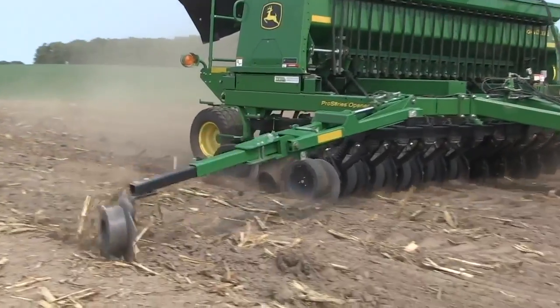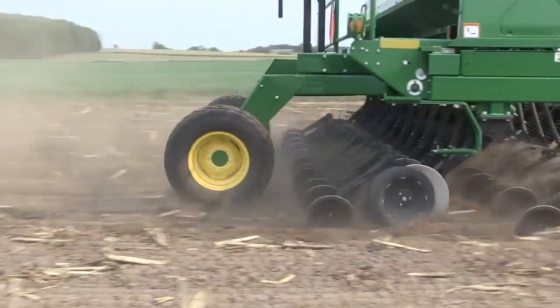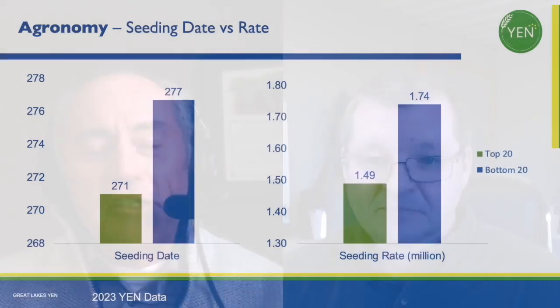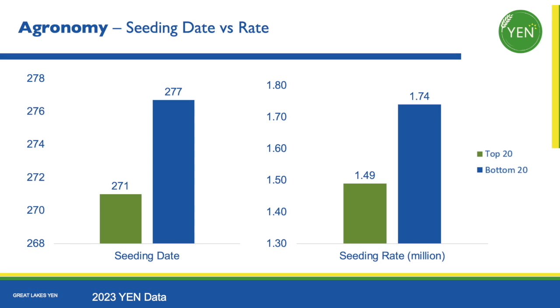I think probably the most important thing high-yield growers are doing is planting — I used to say planting early, but I would say planting on time — because the only way to get those high head numbers is to get planted in the fall early enough to allow fall tillering to occur. Planting date is probably the very most important thing you can do to drive higher yield potential. We see it in our research trials, we're seeing it in the YEN, we're seeing it everywhere. It's a six-day difference between the high-yield and low-yield growers in 2022, and an 11-day difference in another year. Come on — what's six to ten days? It can't mean anything.